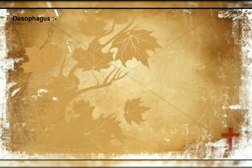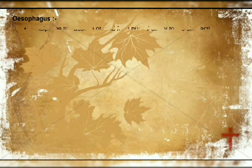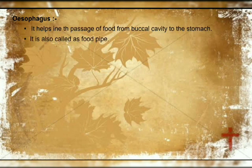Next is the oesophagus — commonly called the food pipe. No digestion takes place in it; it only helps to transfer food from mouth to stomach. A movement takes place in it called peristaltic movement.